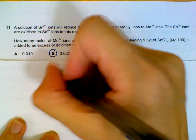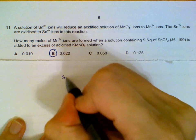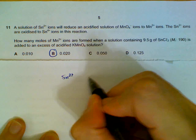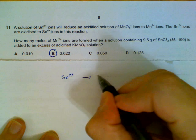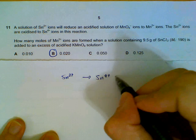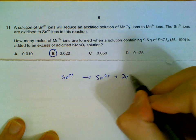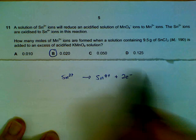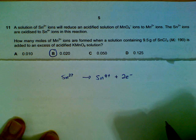So focus on the tin first. We have tin 2+ becoming 4+, right? And if we balance the charges, we will have 2 electrons on this side. So this is the equation that tin will undergo.